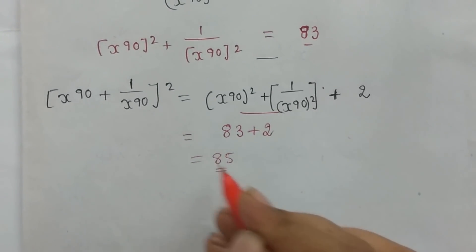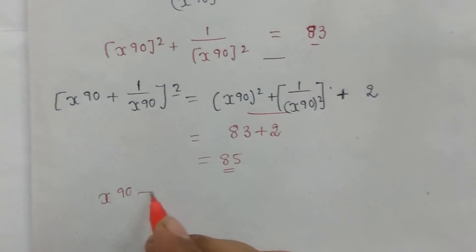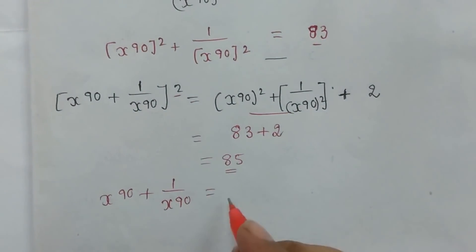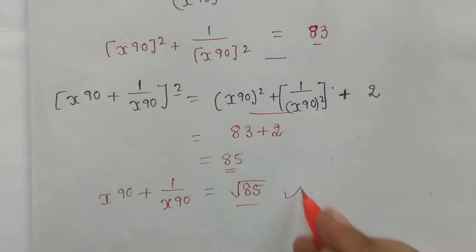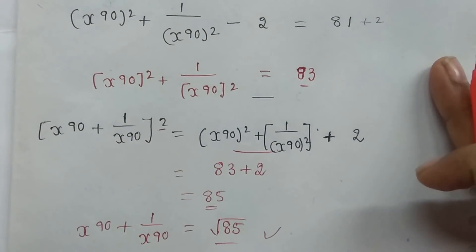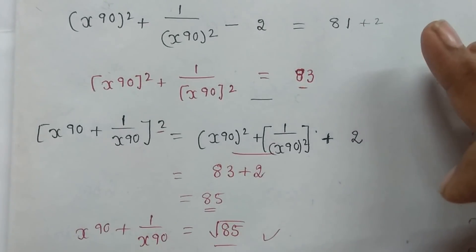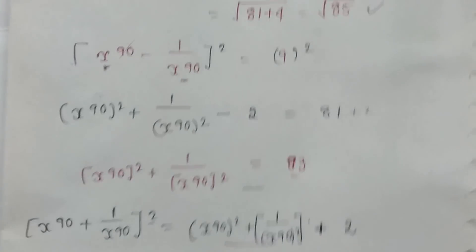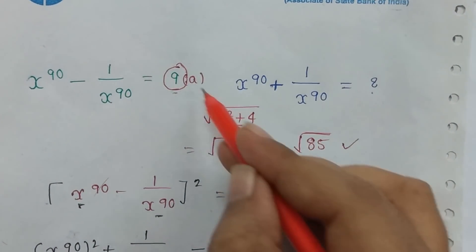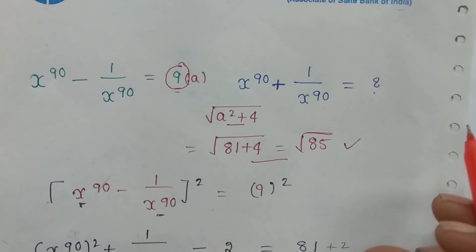So with the shortcut formula root(a² + 4), directly substituting gives the answer in a single step. The concept and formula — once understood — you can apply directly. Concept and formula are clear.